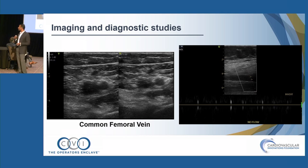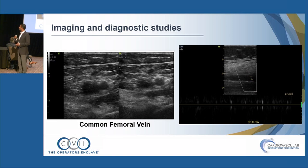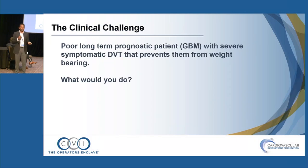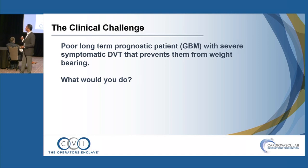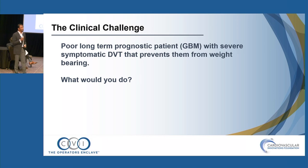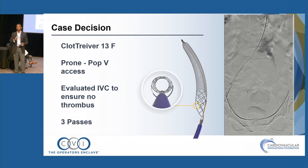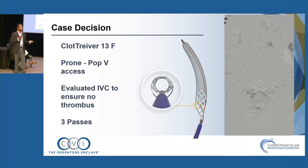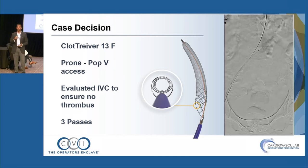Ultrasound is heavily relied upon in our center, though limitations include difficulty visualizing proximal areas — iliacs are very hard to see, especially in obese patients. The ultrasound confirmed absolutely no flow in the common femoral vein. The real question is whether to treat. We chose to use the ClotTriever for what appeared to be a fairly new clot. In our center, we use a standardized platform and approach to go through cases exactly the same way every time to minimize errors.